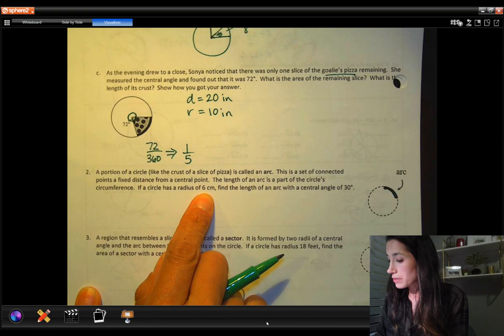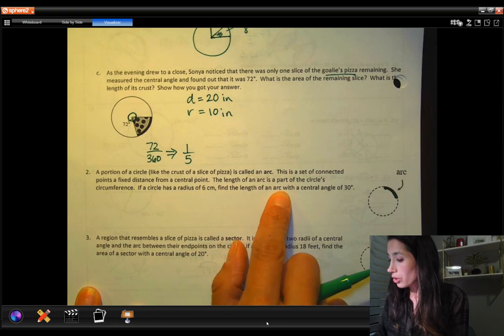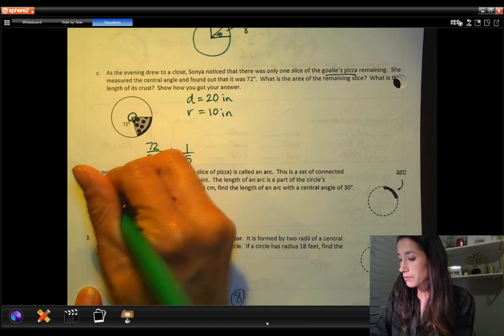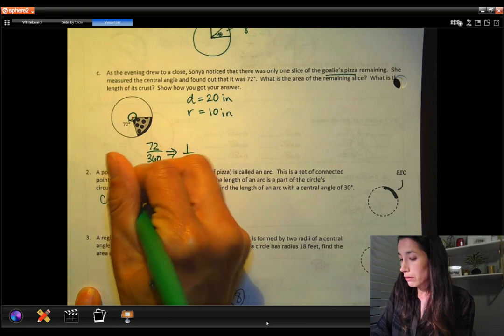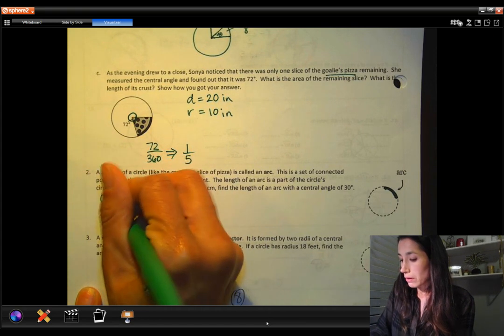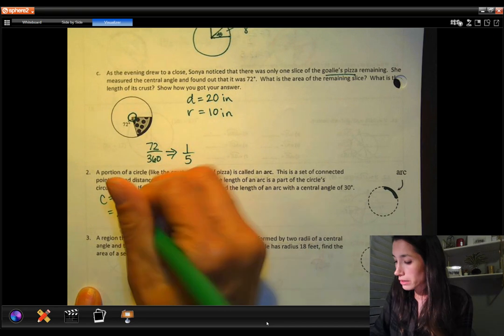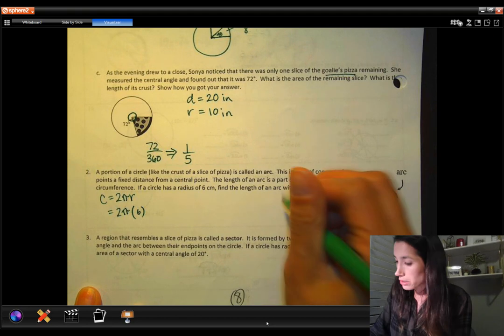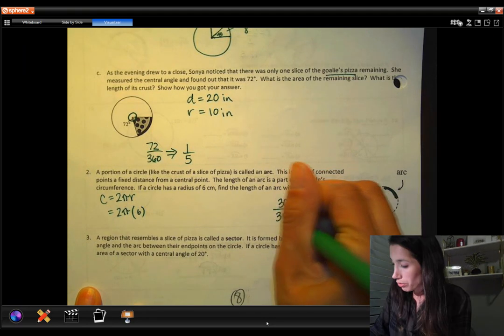If a circle has a radius of 6, find the length of an arc with a central angle of 30. So we know our circumference formula is 2πr. And we know our radius is 6. I'm just going to plug in that radius. And then all I would have to do is say, well, 30 is how many degrees out of a possible 360?